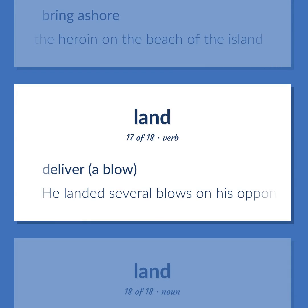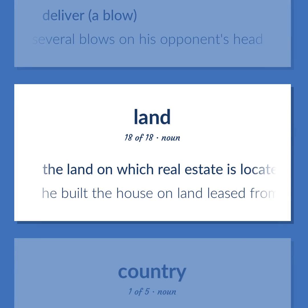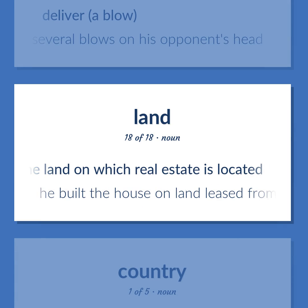Land: deliver a blow — he landed several blows on his opponent's head. Also, the land on which real estate is located — he built the house on land leased from the city.